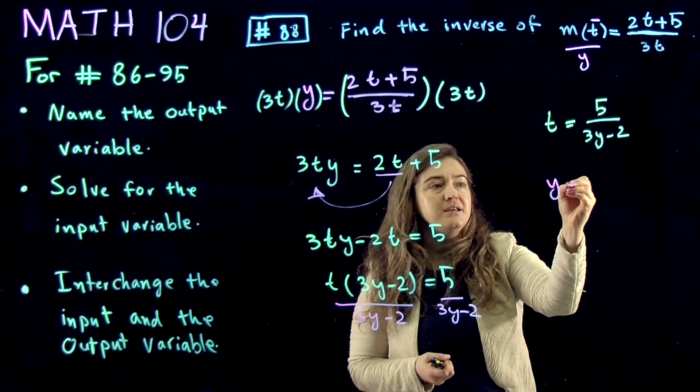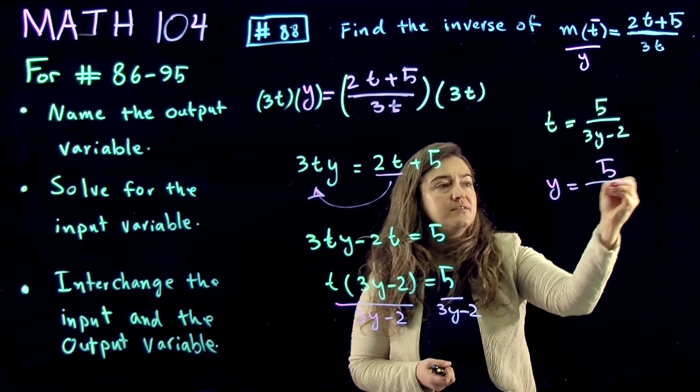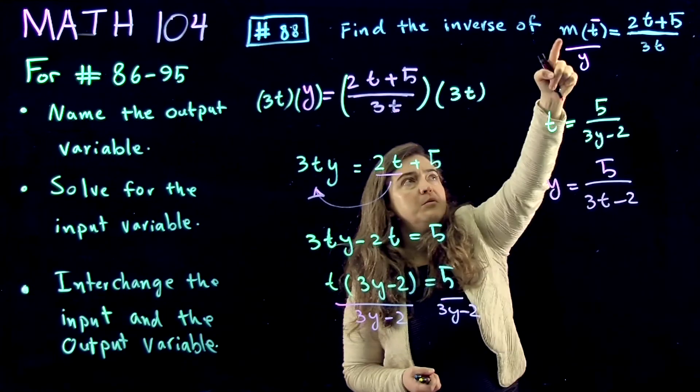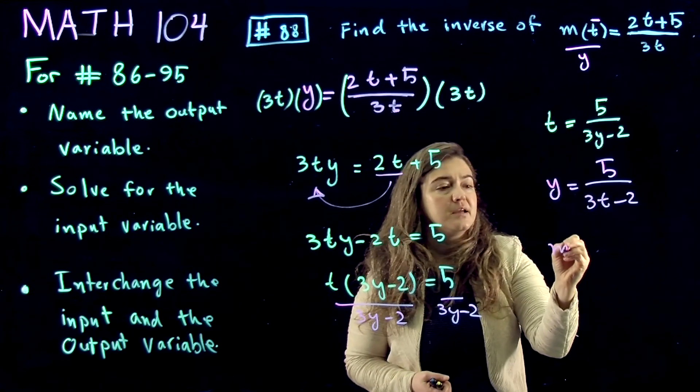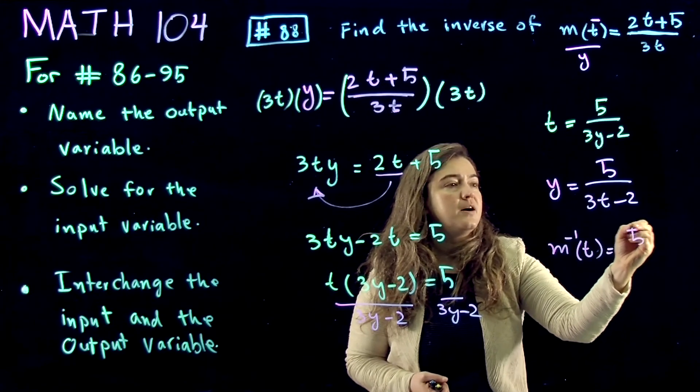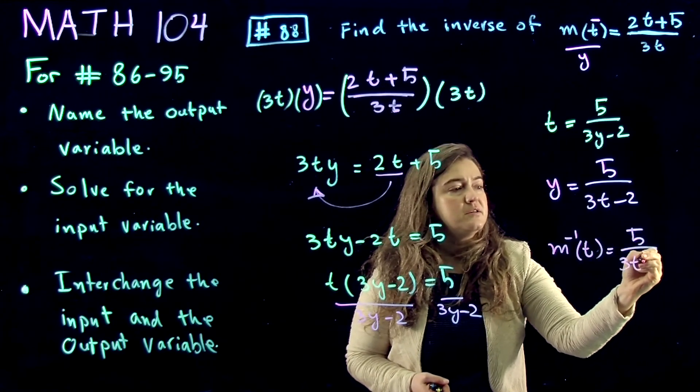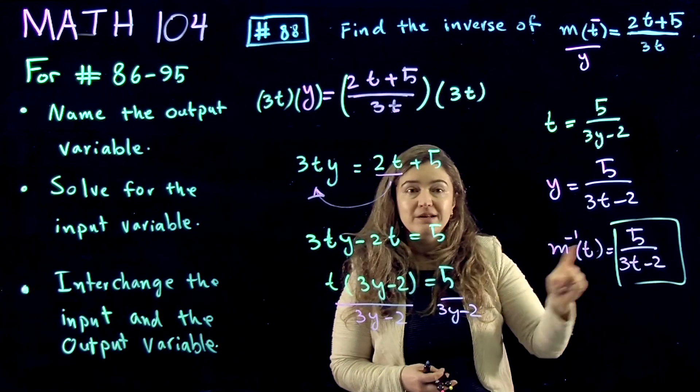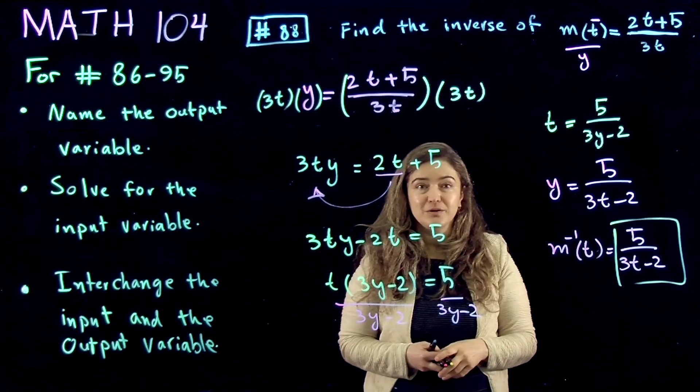So in here, I get y is equal to 5 divided by 3t minus 2. Which, what was the function? m. m inverse of t is going to be 5 over 3t minus 2. And this is what you enter in your gateway exam. And you're done.